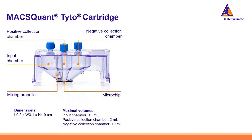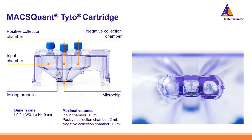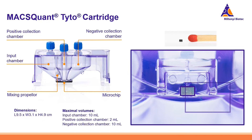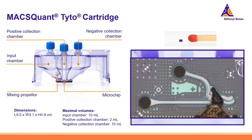Looking more closely at the cartridge, there is an input chamber where the cell product enters and cells are kept in suspension with a mixing propeller. Target cells are sorted into the positive collection chamber and all others go to the negative collection chamber — so there is no waste on the MaxQuantito. The real magic happens in the microchip at the bottom, where the actual sorting process takes place. You can see how small this microchip actually is.